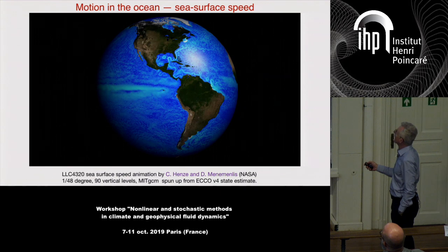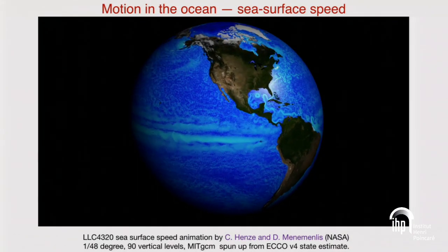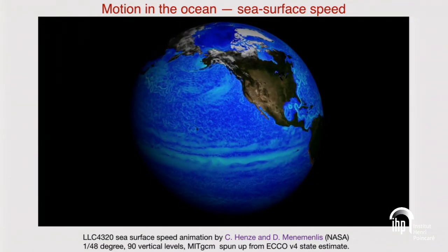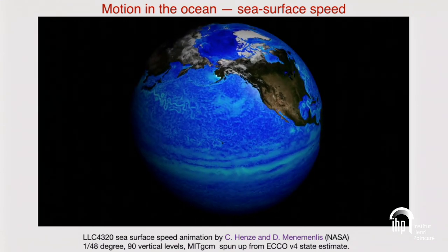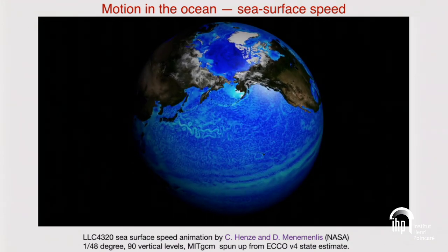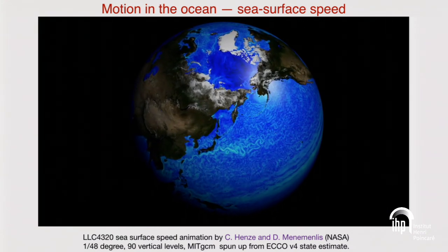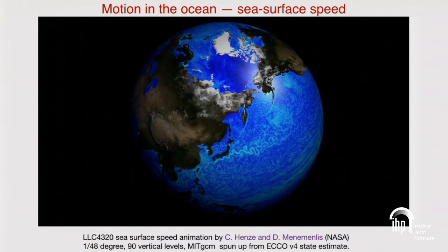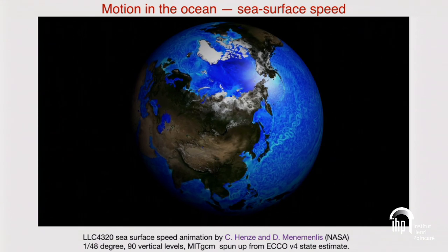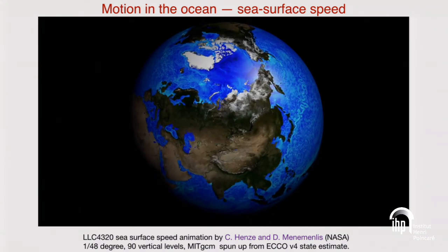The ocean is in motion. This is perhaps the largest, longest, and highest resolution global ocean circulation simulation ever run — done at NASA. What you're looking at is the sea surface speed, the square root of u squared plus v squared. Here we see the Kuroshio current, with one frame every six hours, so on those timescales the Kuroshio is more or less steady. What's this rapidly flashing material here?